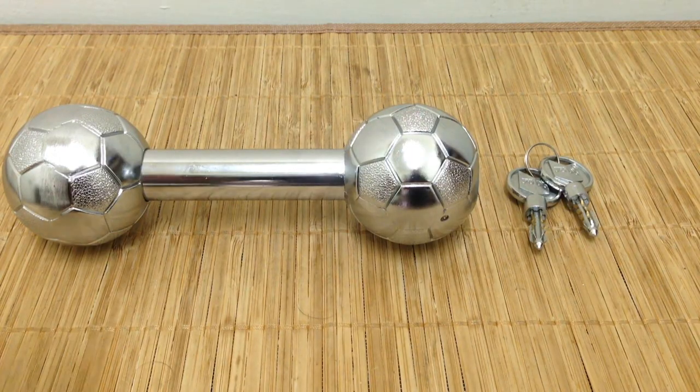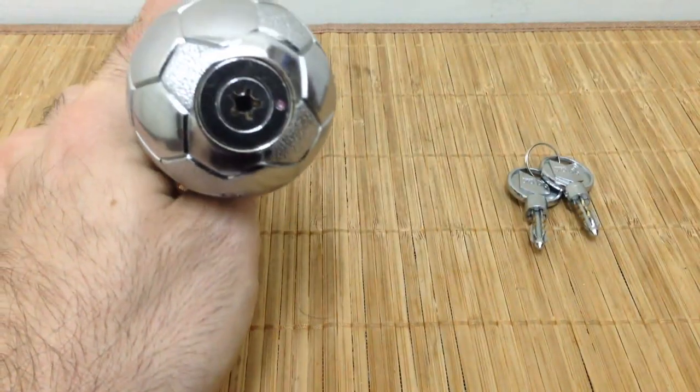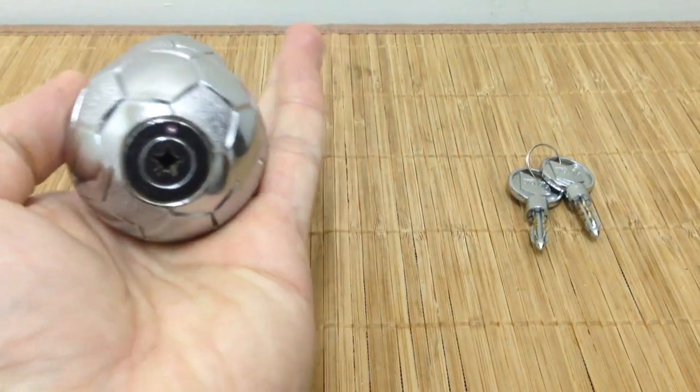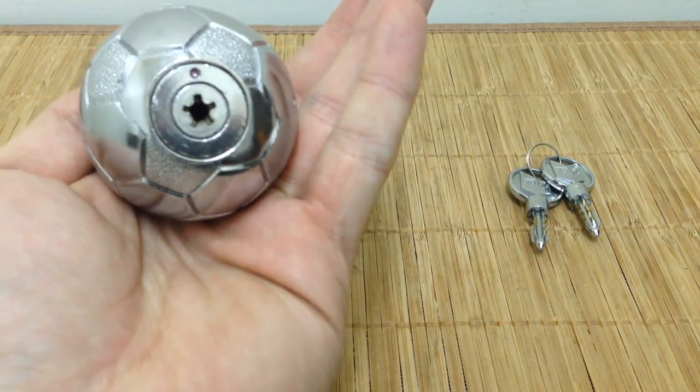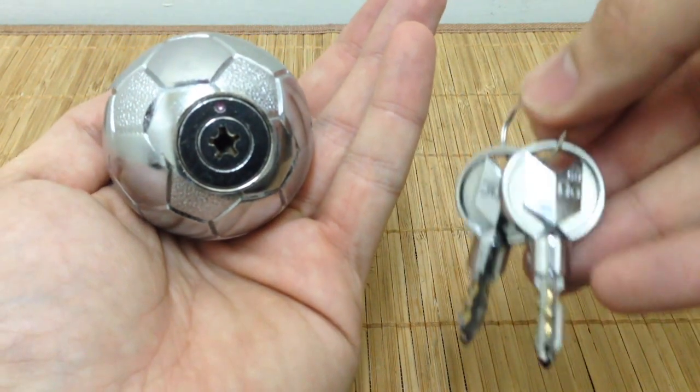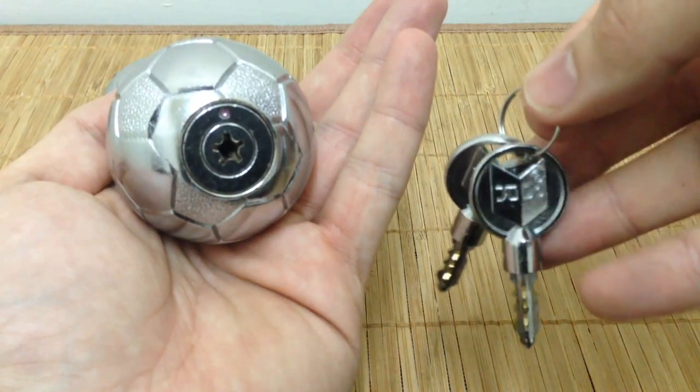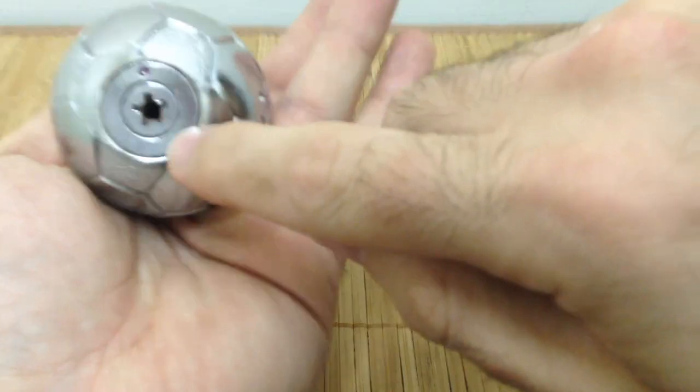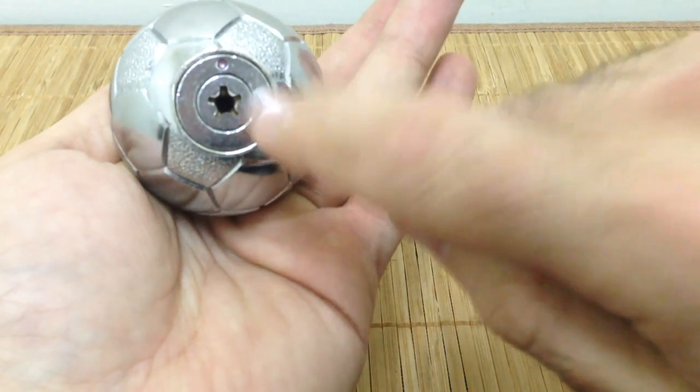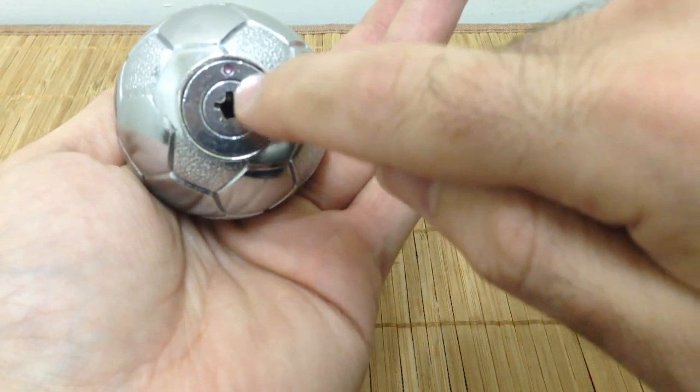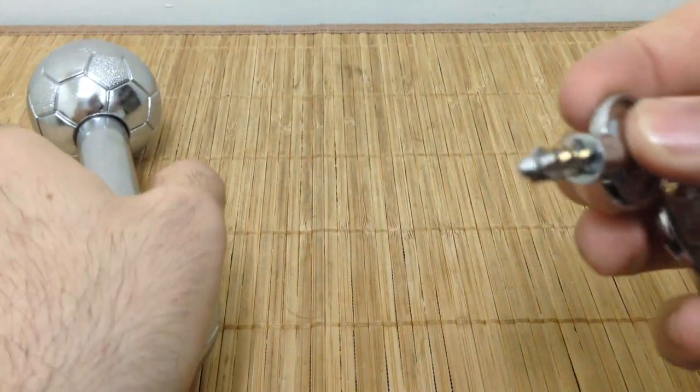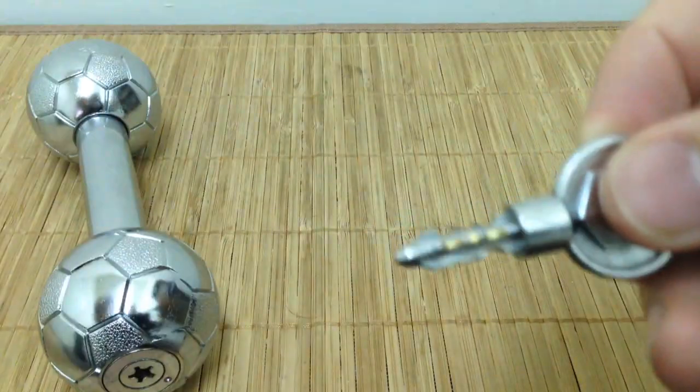All right, first thing I want to talk about is the core used on this thing. I call this the starfish core or the asterisk core, but the official name is the judo core or the judo five-way core for obvious reasons because it has five arms. On each arm, there's a row of three pins, so it's going to be 15 pins total.